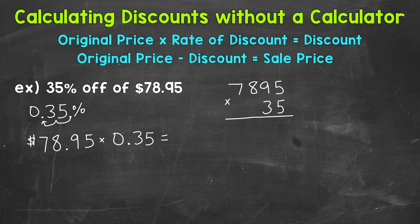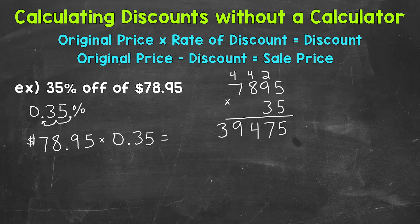I'm going to multiply 7895 times 35 and worry about the decimal at the end. Starting with 5 times 5 is 25. 5 times 9 is 45, plus 2 is 47. 5 times 8 is 40, plus 4 is 44. And 5 times 7 is 35, plus 4 is 39. We are done with the 5. We need our placeholder 0 because we are moving one place value to the left. Now 3 times 5 is 15.